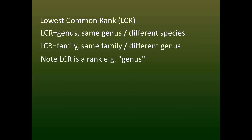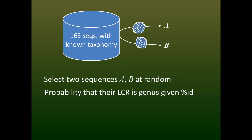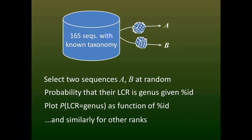Note that the LCR is a rank, such as genus, not a particular group name, such as Salmonella. Suppose we have a set of 16S sequences with known taxonomy and we select a pair at random — all we know is their sequence identity. Now we can calculate the probability that the LCR is, say, genus for all possible identities. This gives us a plot of the LCR probability as a function of identity, and we can do the same thing for other ranks.